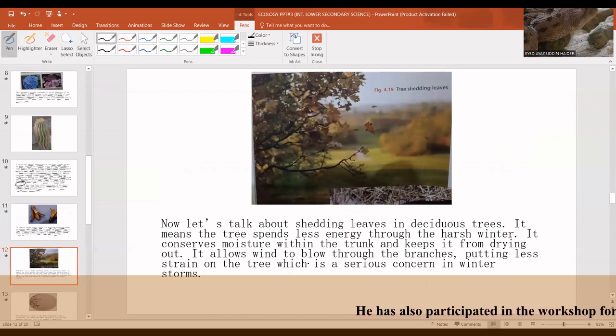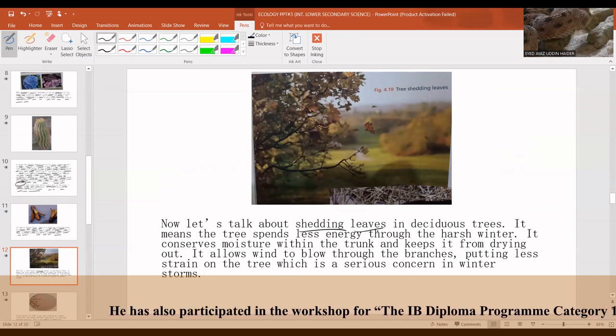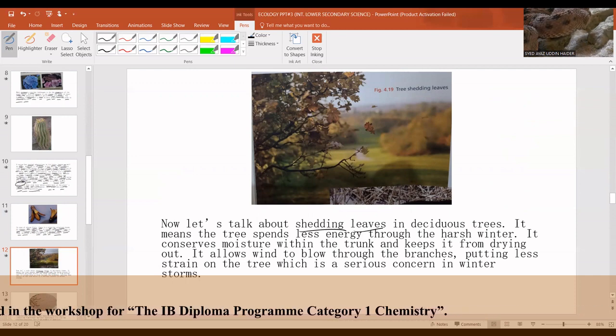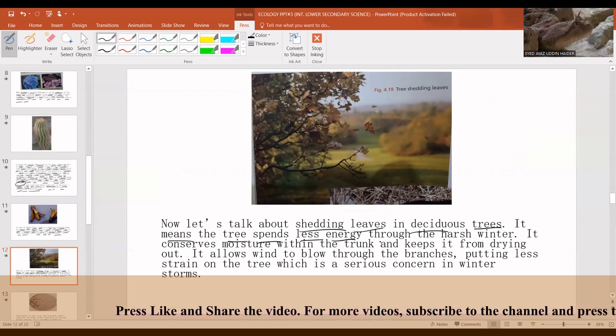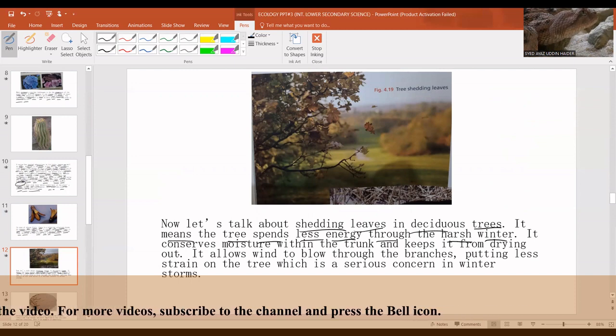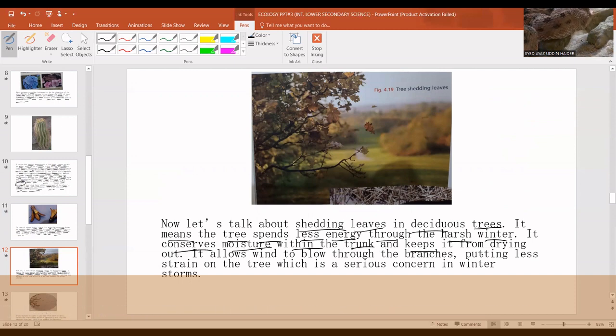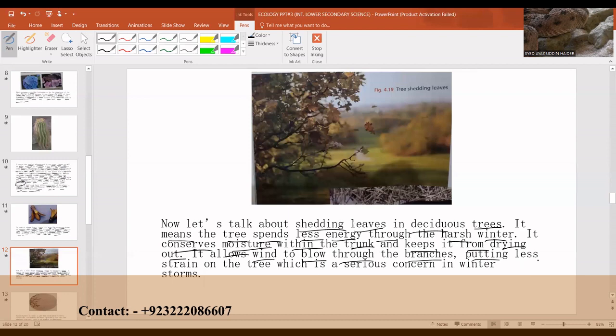Now let's talk about shedding leaves. This usually happens during autumn or in winter in deciduous trees. It means that the tree spends less energy through the harsh winter. It conserves moisture within the trunk and keeps it from drying out. It allows wind to blow through the branches putting less strain on the tree which is a serious concern in winter storms.